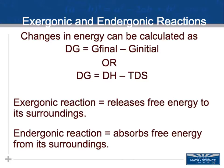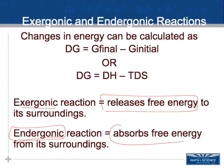Now let's distinguish exergonic versus endergonic. Exothermic and endothermic deal specifically with heat. Exergonic reactions release free energy to the surroundings, where exothermic releases heat — a negative change in enthalpy. Endergonic reactions absorb free energy, where endothermic has a positive change in enthalpy — it's absorbing heat. We can calculate this change in energy for exergonic and endergonic reactions.